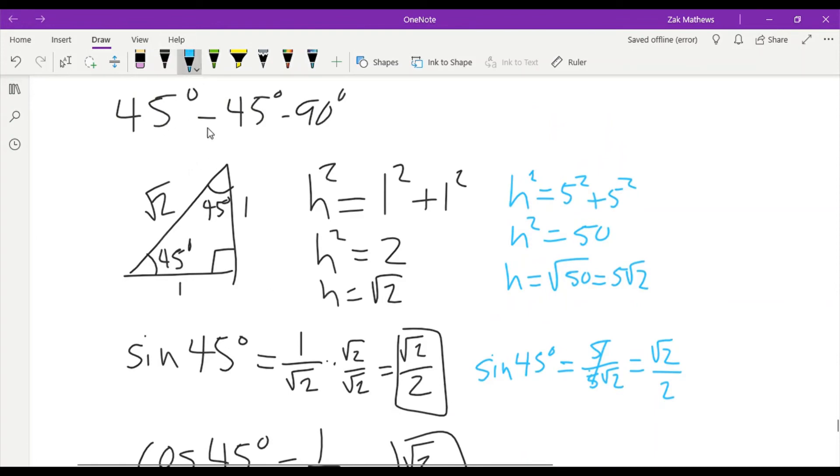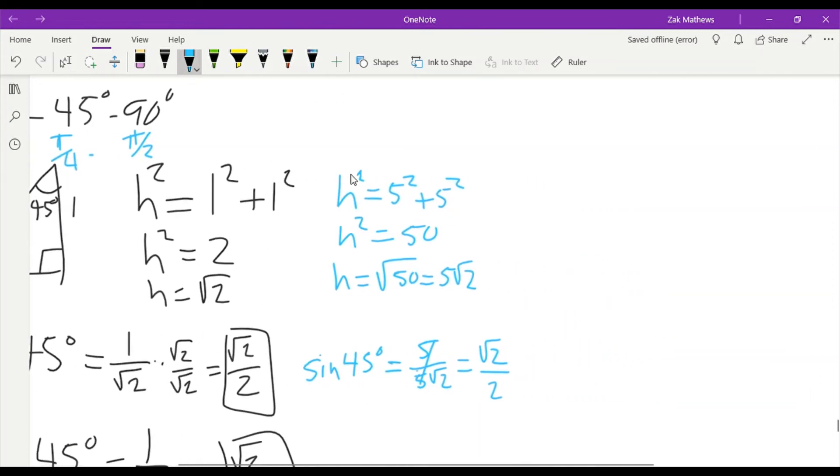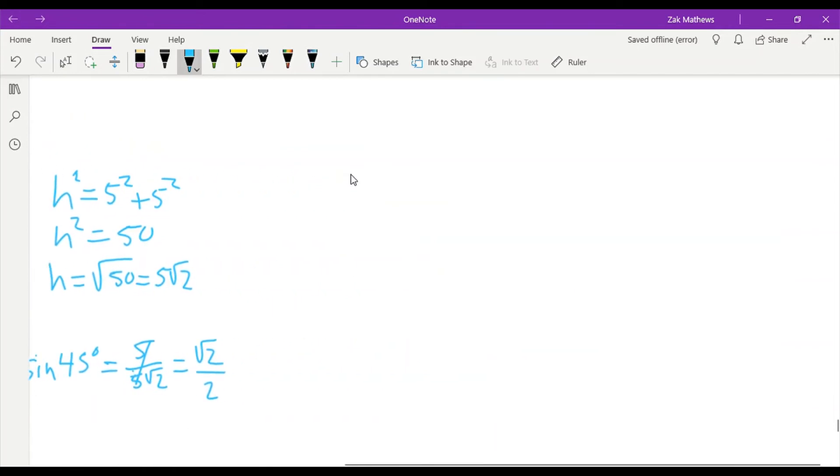I should note that we've been using degrees, but I could have also used radians. Radians are pi over four, pi over four, and pi over two. So I call it 45-45-90 right triangle just for efficiency. But we could have just easily called it pi over four, pi over four, pi over two right triangle.